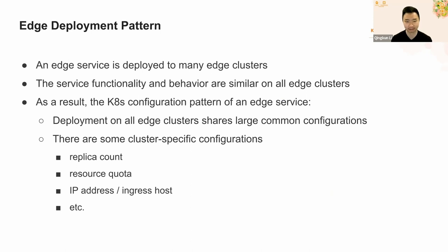For the deployment of all edge services, they all follow the same pattern. Usually an edge service is deployed to many edge clusters, and the service functionality and behavior on all edge clusters are very similar or the same. For example, the video CDN cache service, when deployed to all edge clusters, serves the same CDN functionality for local users. As a result, the Kubernetes configuration will share a large portion of common configurations, and at the same time there are also a small portion of cluster-specific configurations, such as replica count, resource quota, IP address, which might be configured differently on different edge clusters.